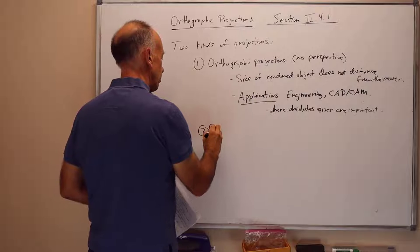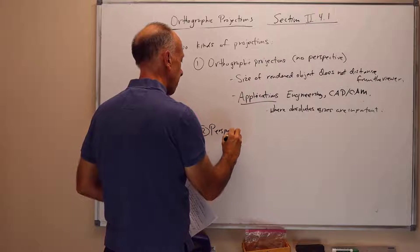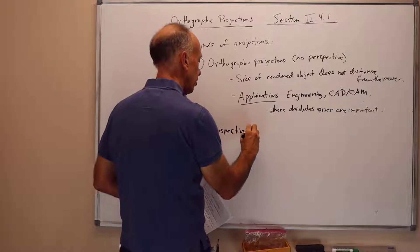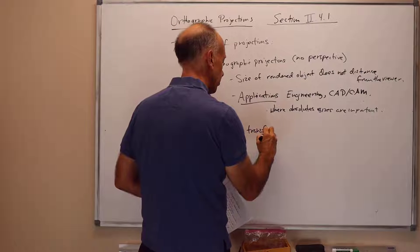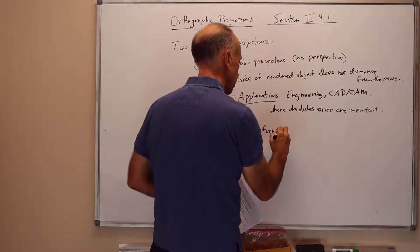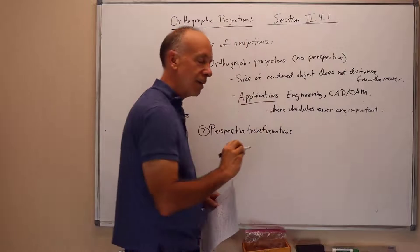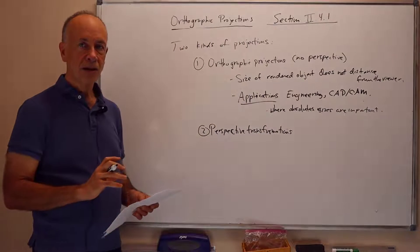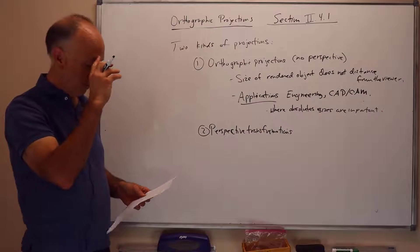The other type of transformations is perspective transformations, and these do take distance from the viewer into account when you're rendering objects. For perspective transformations, farther away objects do look smaller just by virtue of being farther away.